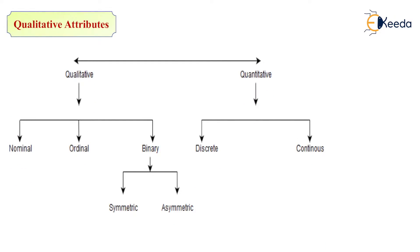In the qualitative attributes, we are having nominal, ordinal, and binary. In binary we are having symmetric and asymmetric data types. And in quantitative, we are having one discrete data type and one is continuous data type.